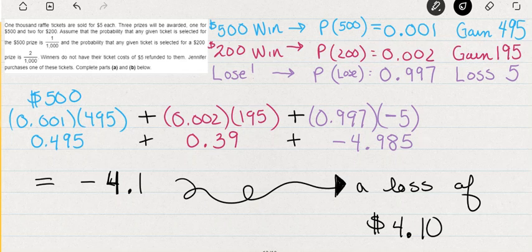This is a really good example of an expected value problem. So thanks for asking this one. This is an important type of problem because you have to take into consideration that there is a charge for this ticket. Whether you win or lose, you end up with a fee of $5. So let me break this down.